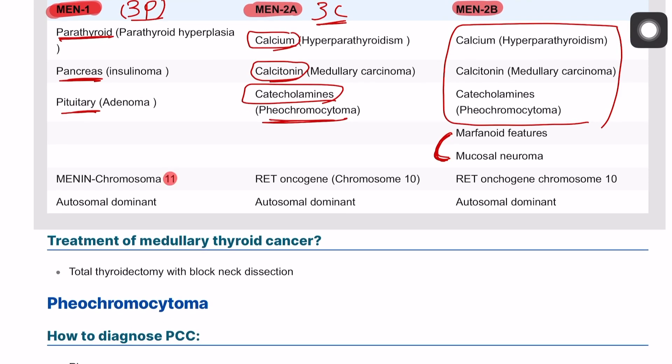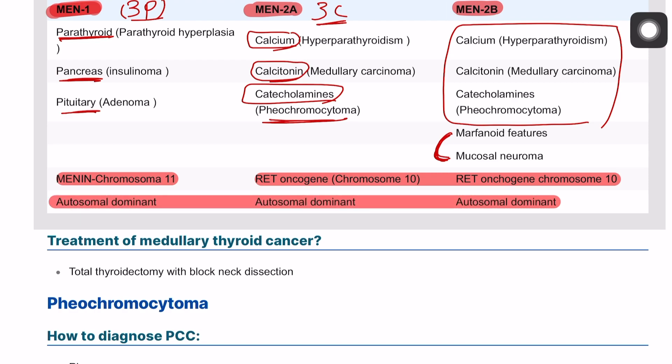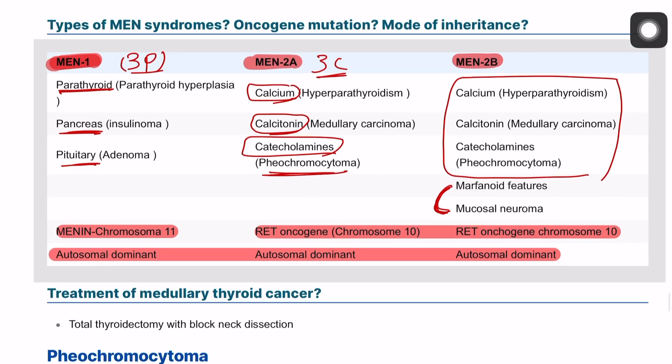MEN type 2B is the same as 2A but with the addition of marfanoid features and mucosal neuromas. These are caused by a MEN1 gene mutation on chromosome 11, or a RET gene mutation on chromosome 10. All of them are autosomal dominant. Treatment of medullary thyroid carcinoma is usually total thyroidectomy with block neck dissection.